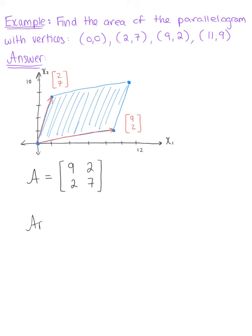So the area of this parallelogram is defined by the absolute value of our determinant of the 2 by 2 matrix. So this is the absolute value of 9 times 7 which is 63 minus 4 which gives us 59. So we can say that therefore the area of the parallelogram is 59 square units.